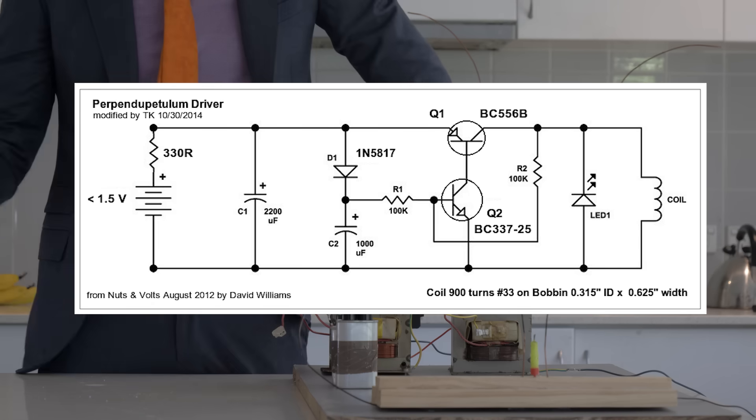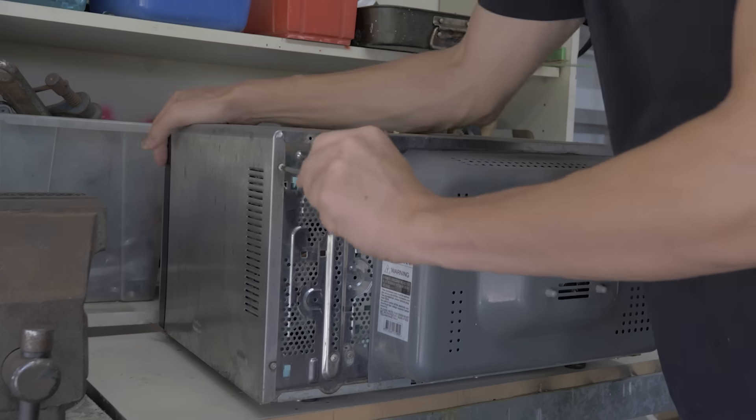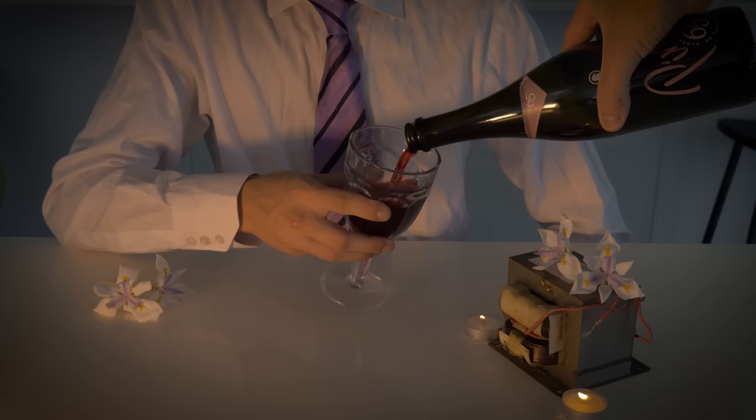And this is the schematic I'm following. Jax, you almost built a waving cat. So, the first thing we're going to do is take the transformer out of the microwave. And again, this is extremely dangerous, so don't do it in your house. Just come over to mine instead.